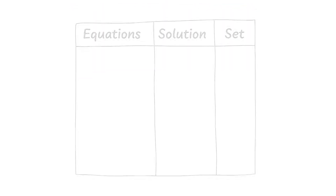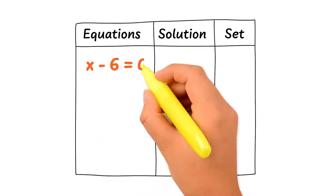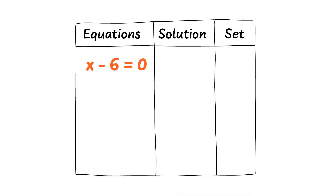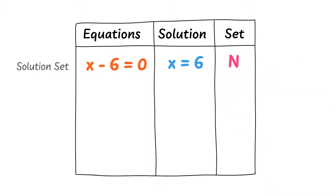Firstly, let me teach you some algebraic equations and their respective solutions. For example, consider the algebraic equation x minus 6 is equal to 0. We know that the solution of this equation is x is equal to 6. 6 is a real number, or it belongs to the set of natural numbers, denoted by N. So the solution of this equation lies in the set of natural numbers or real numbers.